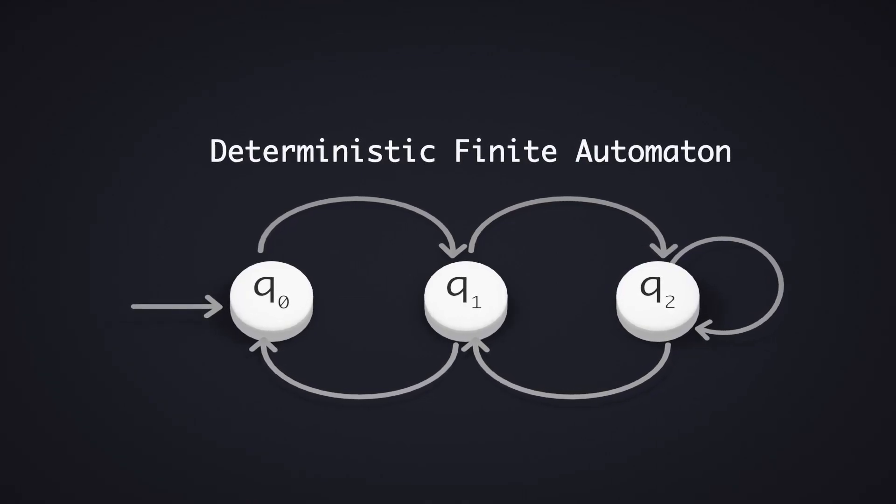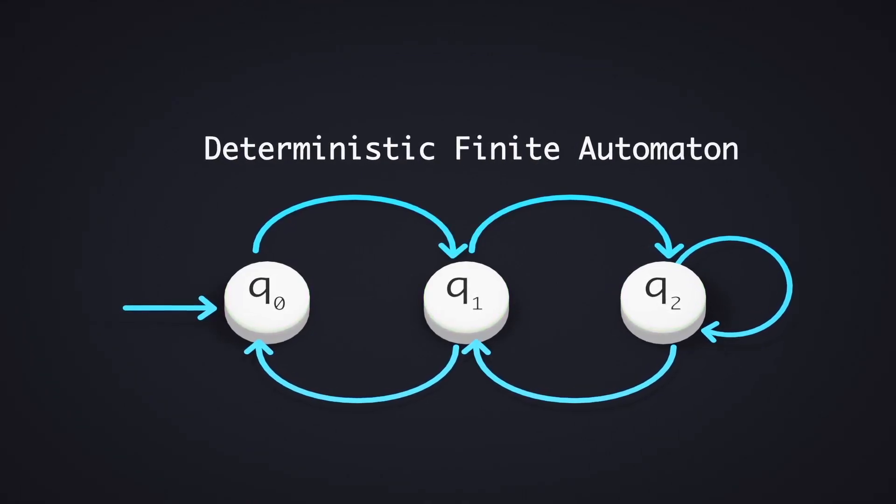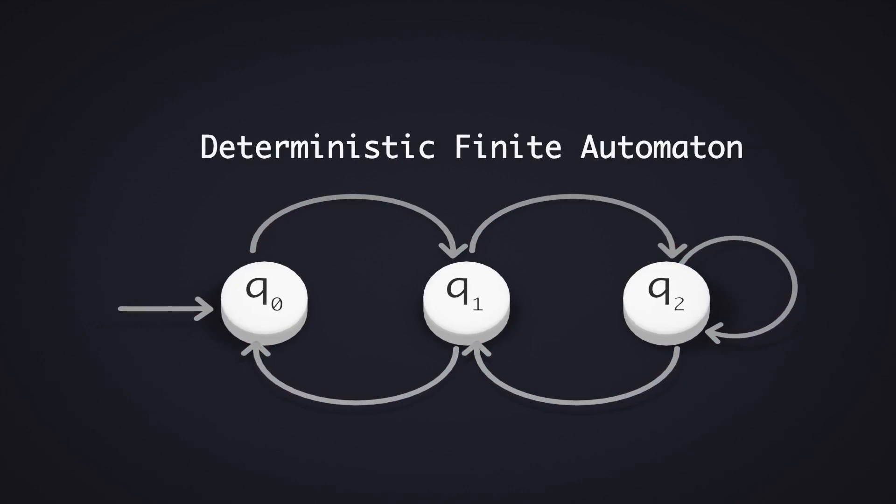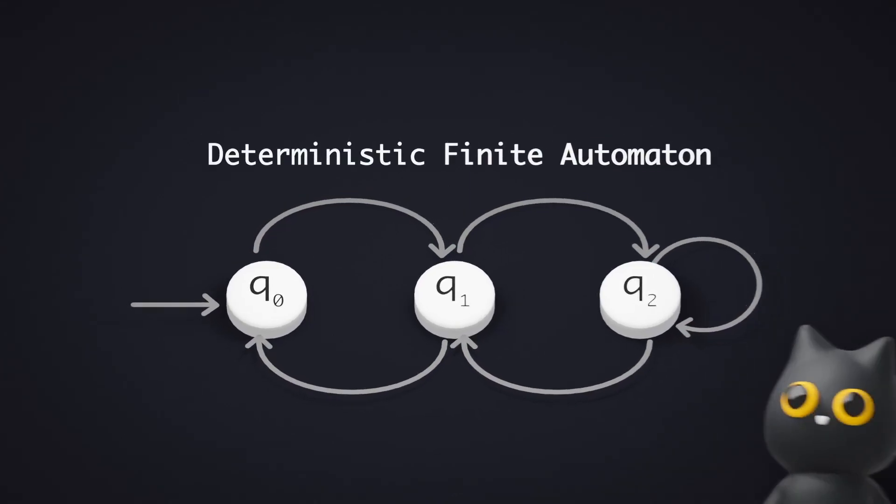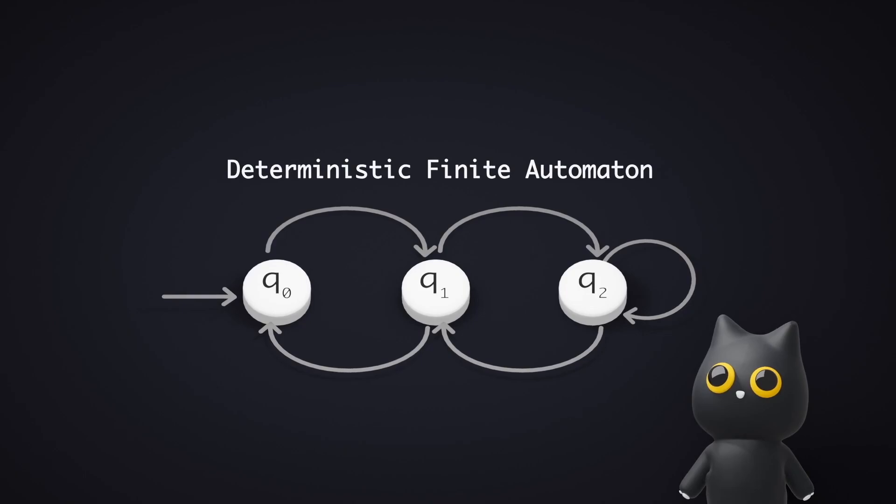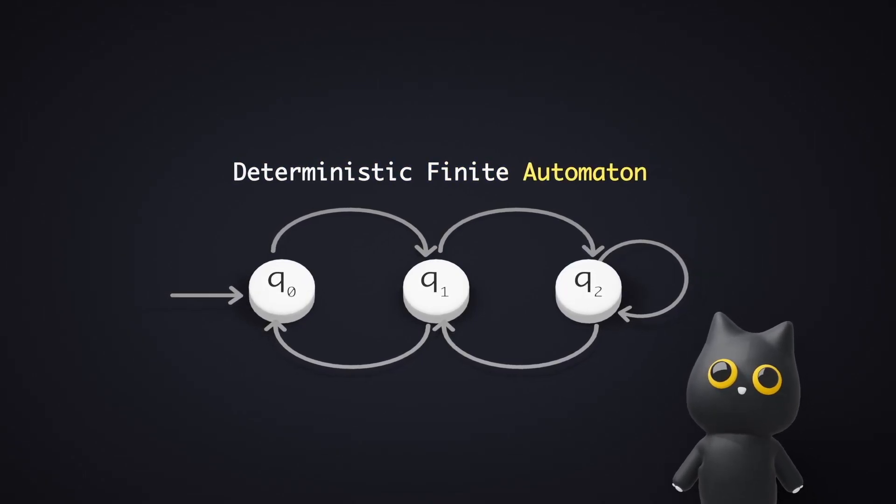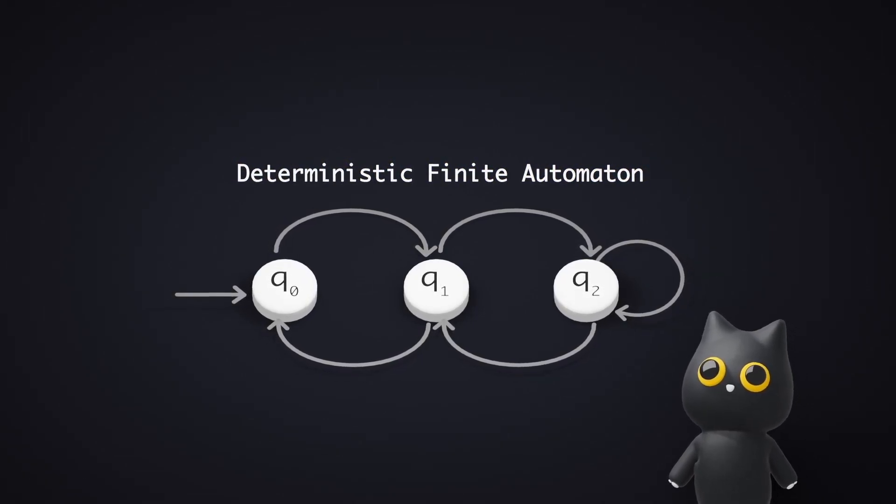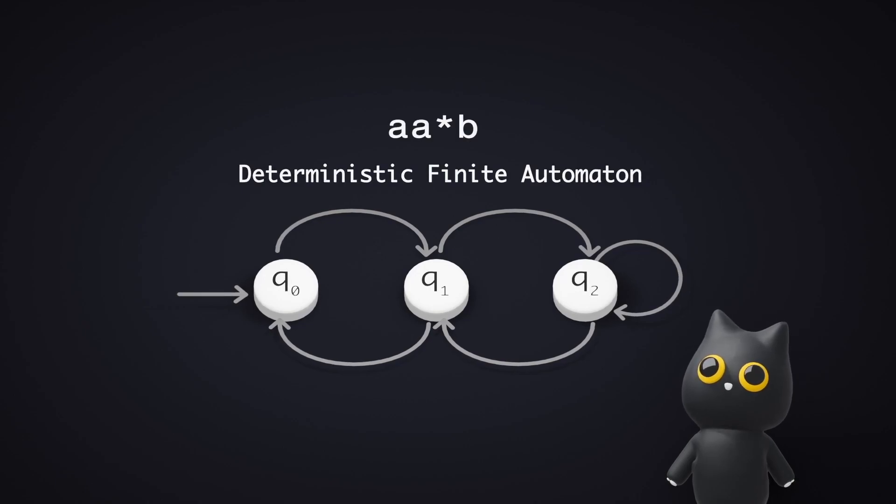Despite it being illustrated with only a few circles and arrows, it has extremely powerful expressive power. In this video, we will learn exactly what a deterministic finite automaton is and how all these relate to the regular expressions commonly used in software engineering.